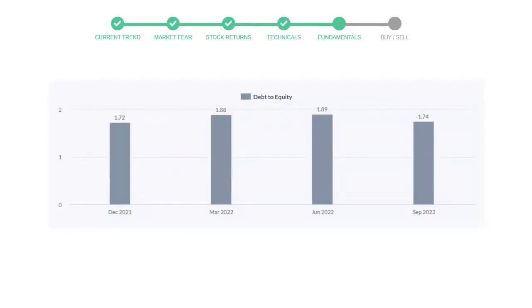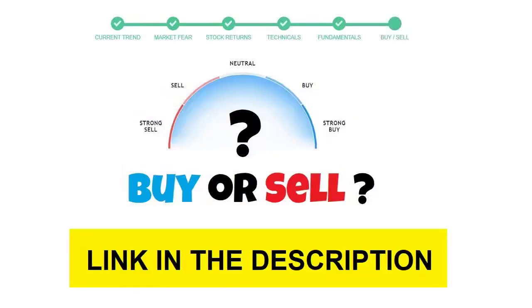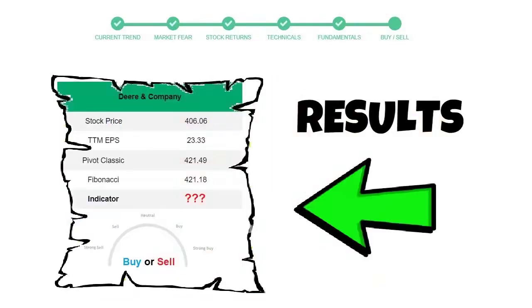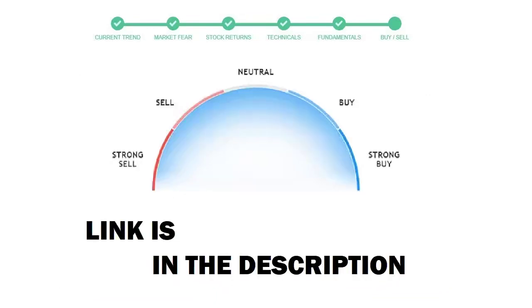To see today's buy or sell decision for this stock, we will use the buy sell indicator web page. Just press the analyze button on the page and it will calculate all indicators and display today's buy or sell decision for this stock. I am putting up the link in the description box.